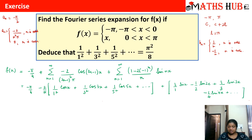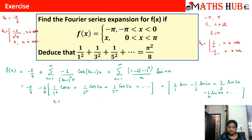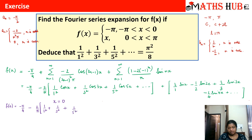This is our Fourier series expansion. Now for the deduction, we can see we need the terms 1/1², 1/3², 1/5², and so on — these are the coefficients of the cosine terms. To retain the cosine terms and eliminate the sine terms, we substitute x = 0, since cos(0) = 1 for all terms and sin(0) = 0 for all terms. So f(0) = minus π/4 minus 2/π · (1/1² + 1/3² + 1/5² + ...) and all sine terms vanish.